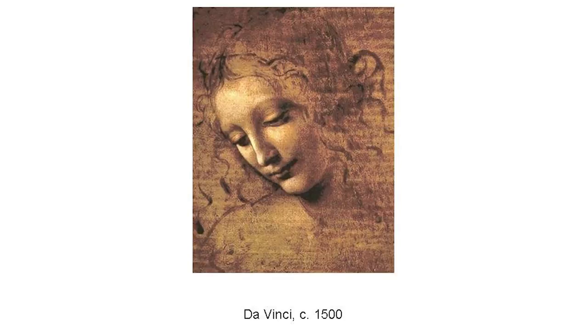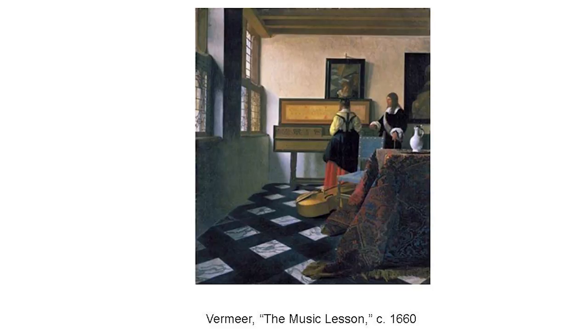This period, starting in 1420, has been referred to by the contemporary artist David Hockney as a period of photorealism. To show a couple of examples: that was 1400. This is da Vinci, 1500 — quite a dramatic difference. This is Vermeer's painting, The Music Lesson, from about 1660. Remember this one, because I'm going to come back to that particular picture in a moment.